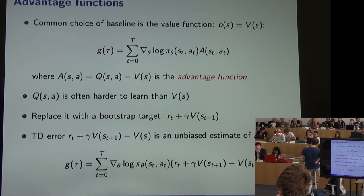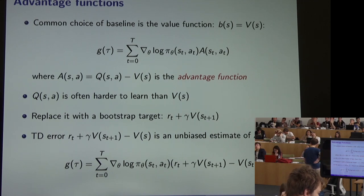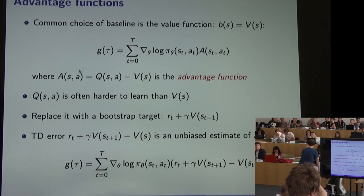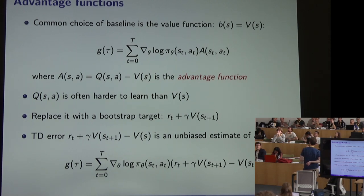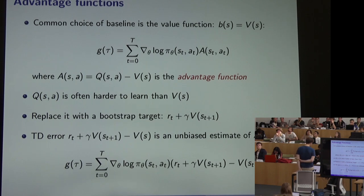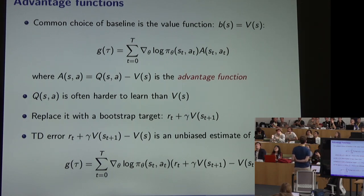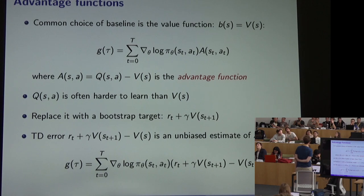To use the advantage function in our gradient we need to estimate Q. But in practice Q can be much harder to learn than V, because V only conditions on the state while Q conditions on the state-action pair, which may involve a large or continuous action space. Even for small discrete action spaces, our ability to predict Q-values for actions not selected with high probability under the current policy is likely quite poor.